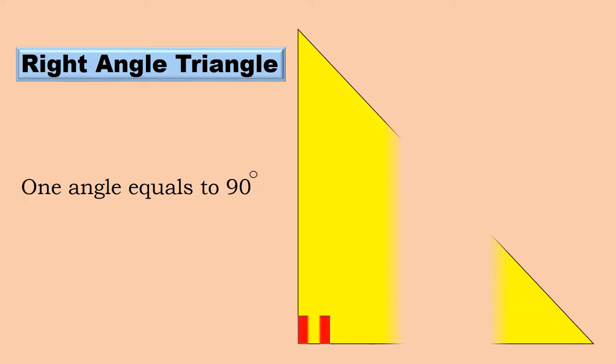Right Angle Triangle. On the Right Angle Triangle, one angle equals 90 degrees.